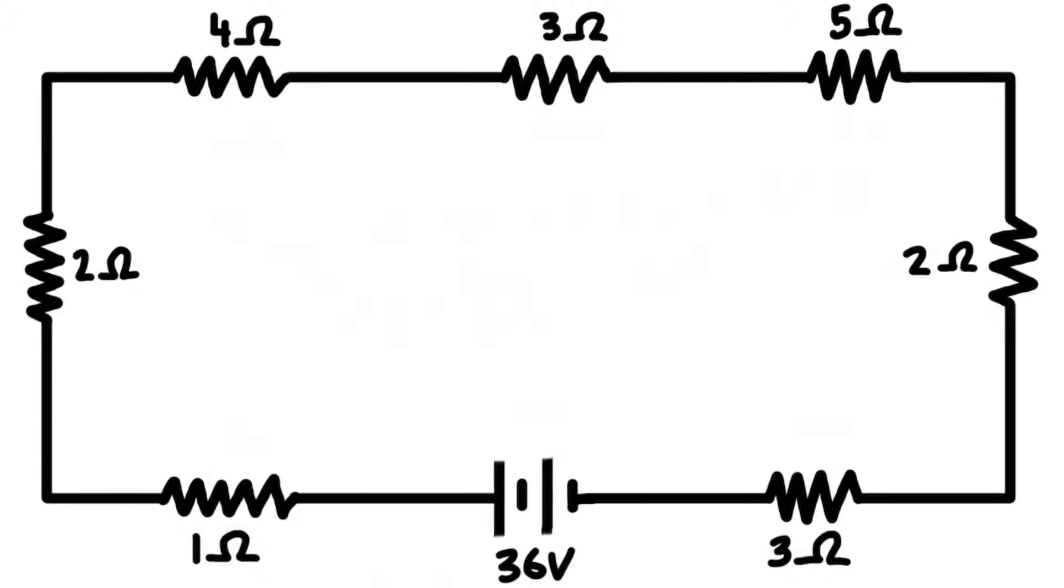Looking at this, we have seven resistors in series, and to get the equivalent resistance all we need to do is add up all of them together.